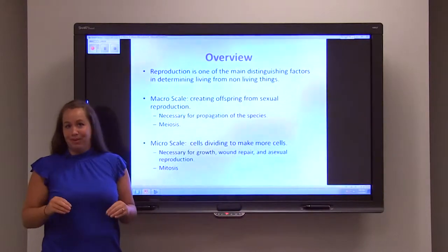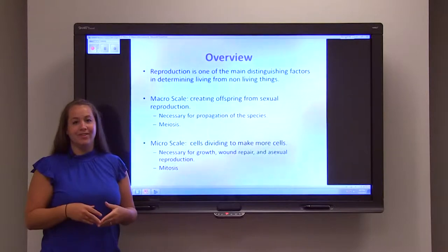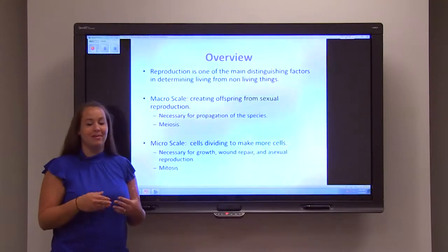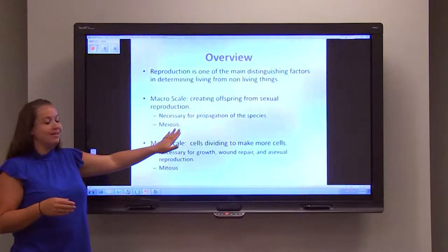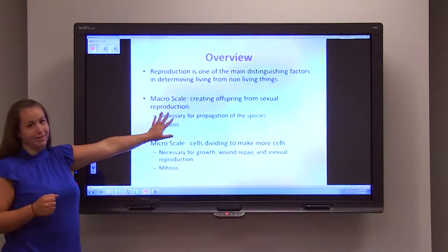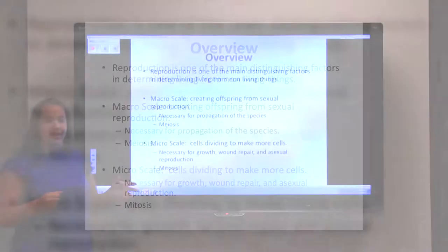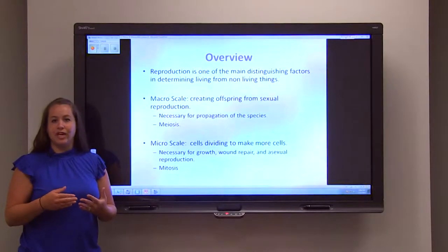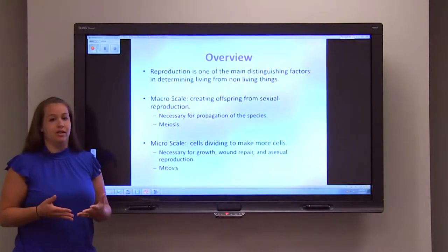For the introduction of both, we talked about reproduction as a characteristic of life, considered on a macro scale and a micro scale. Meiosis is responsible for macro scale reproduction, where offspring come from the process of sexual reproduction — people beget more people. This is necessary for propagation of the species, creating future generations, and allowing genetic variability within those generations.